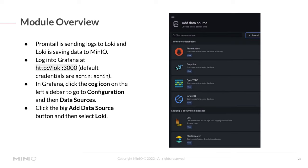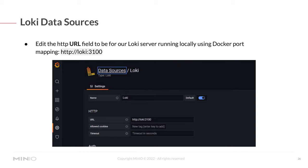So now Promtail is sending logs to Loki, and Loki is saving data in MinIO. Let's fire up Grafana and log in using the default credentials. In Grafana, we're going to add Loki as a data source — Promtail is sending logs to Loki, and Loki is sending logs to MinIO, but now we want to add Loki to Grafana so we can visualize them. Click 'Add data source,' select Loki, then edit the HTTP URL field to represent our Loki server. As set up in Docker Compose, you'll set it to Loki using port 3100.